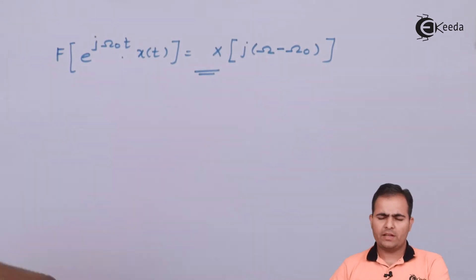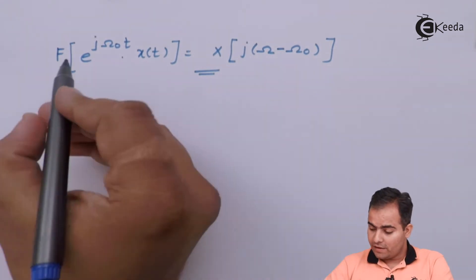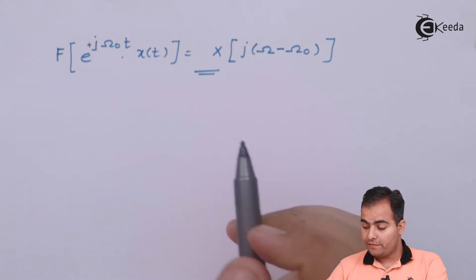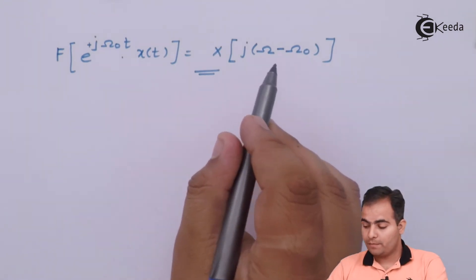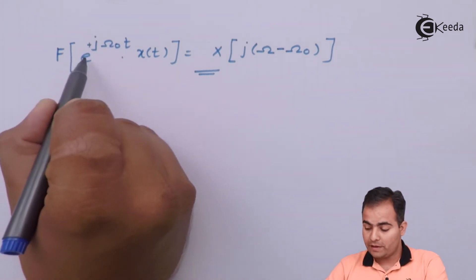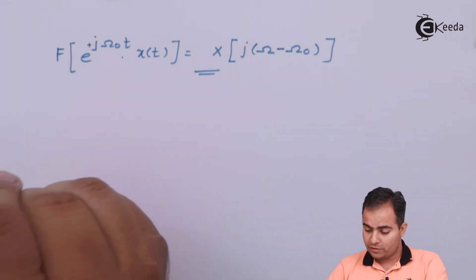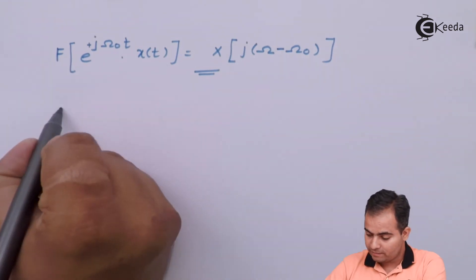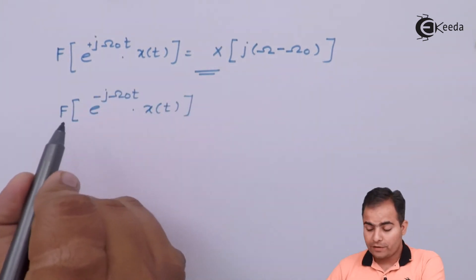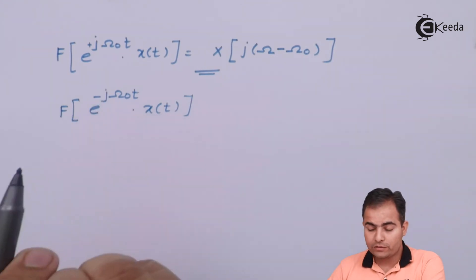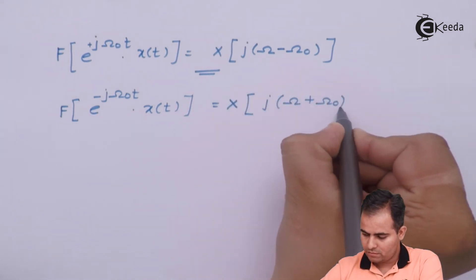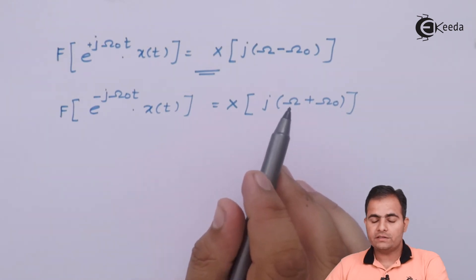Now, if the ω₀ value is positive, we can say that we have advanced the frequency by ω₀ — that is, we multiplied x(t) by e^(+jω₀t). Conversely, if we find the Fourier transform of e^(−jω₀t) · x(t), the result shifts in the opposite direction. This is the complete frequency shifting property.